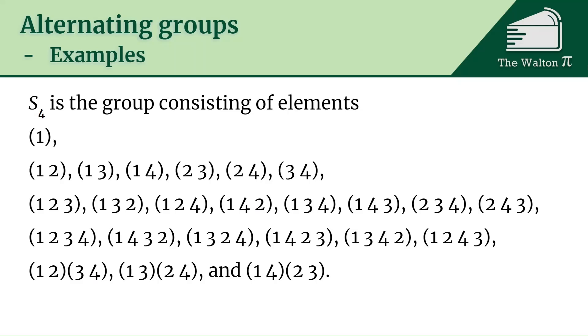We also have six four cycles, and that's (1 2 3 4), (1 4 3 2), and so on. But then we also have three permutations that switch two pairs of elements. For example, (1 2)(3 4), that sends 1 to 2 and 2 to 1, and then 3 to 4 and 4 to 3. So that's what S_4 is.